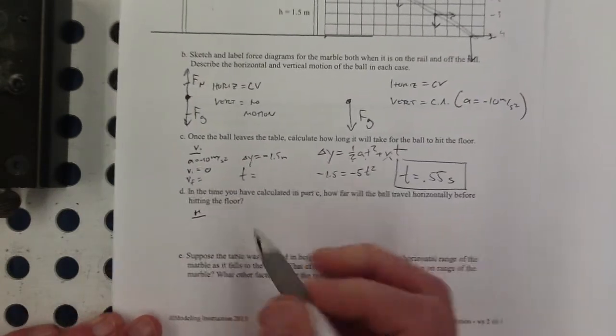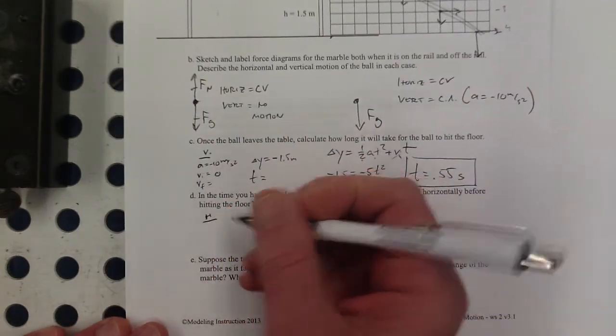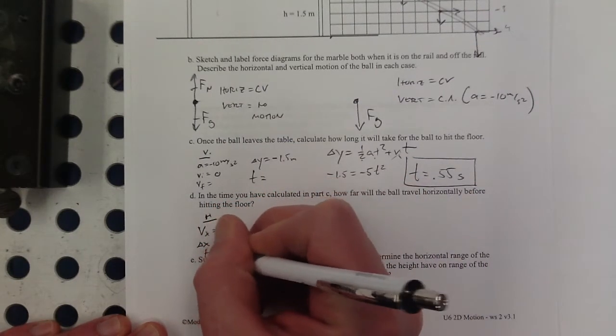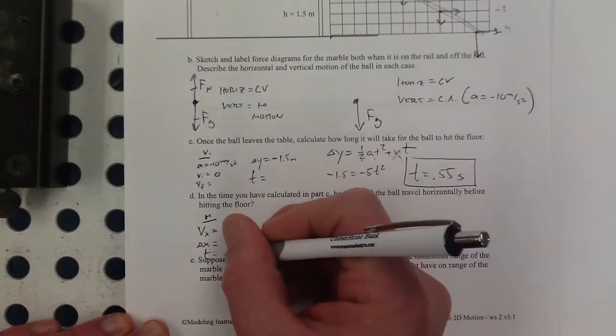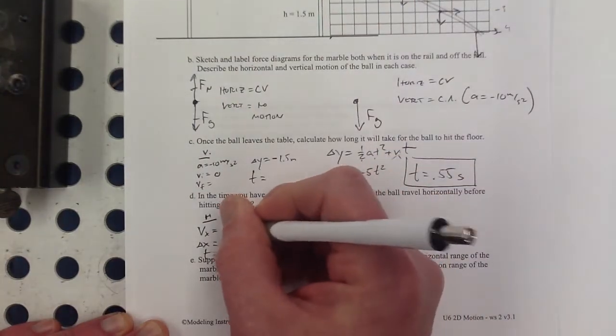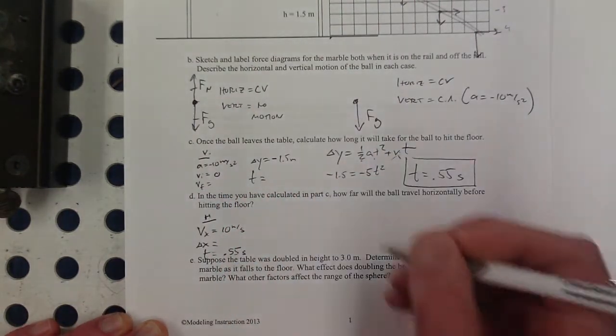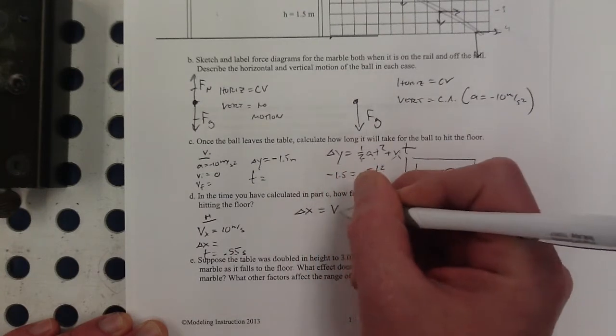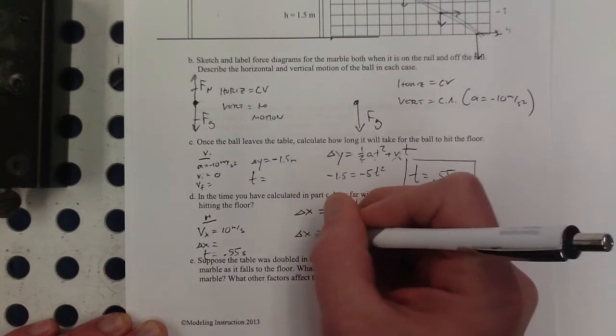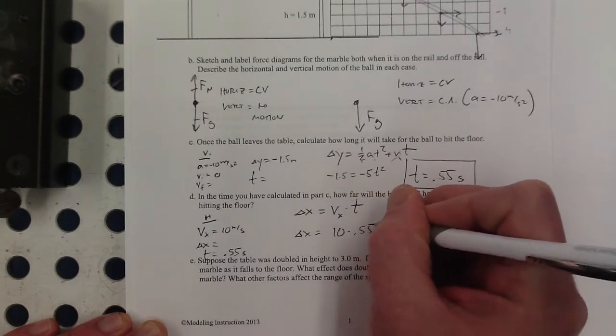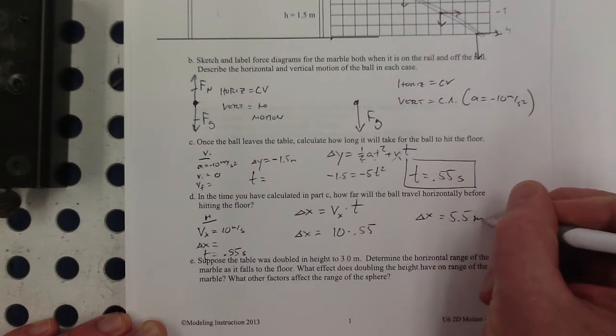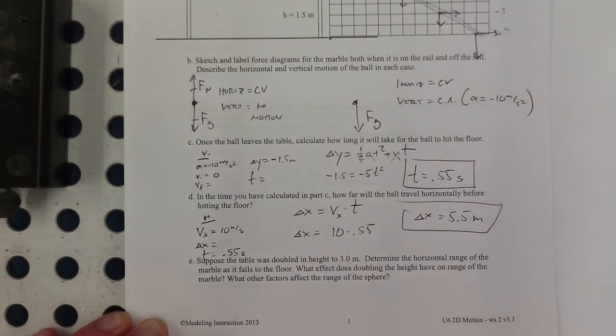In the horizontal direction, I have constant velocity, so the only variables that I have are the constant velocity, delta x, and time. And I just found the time there, and I know that the horizontal velocity is 10. So only one equation here, delta x is equal to my constant horizontal velocity times time. 5.5 meters.